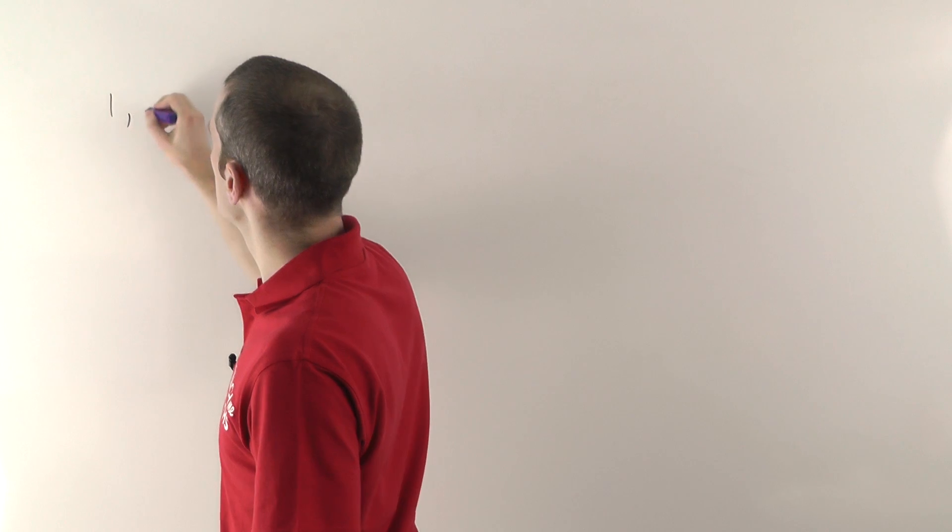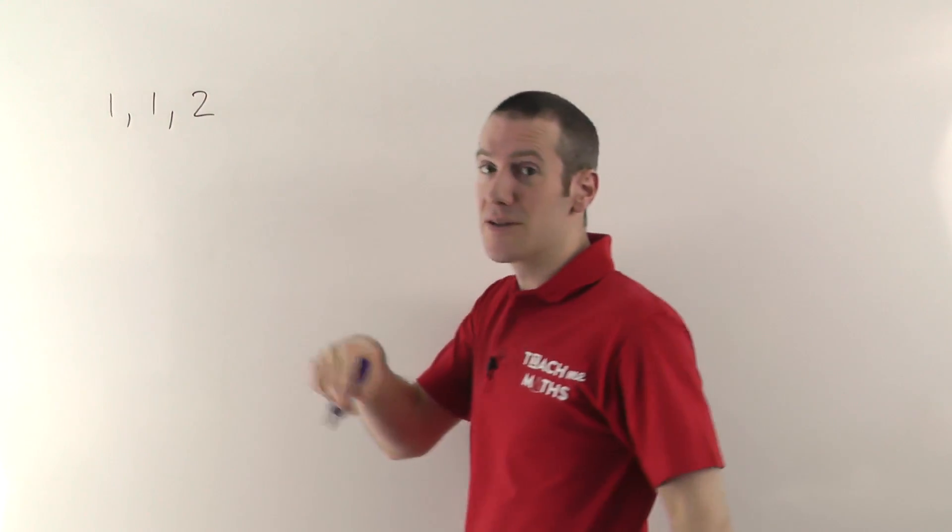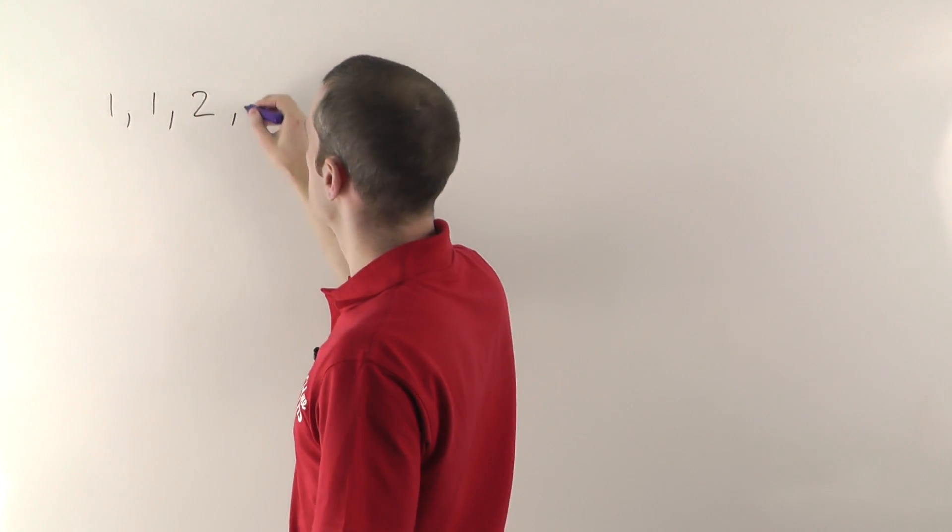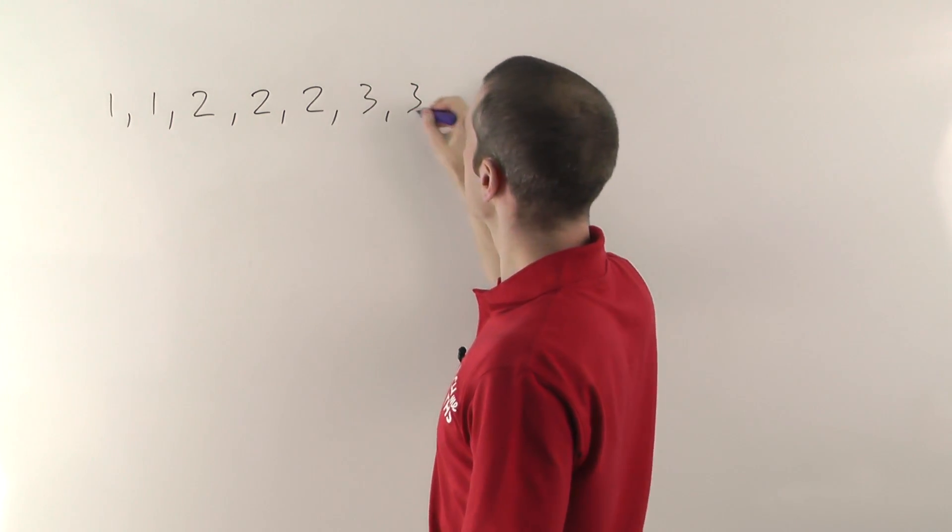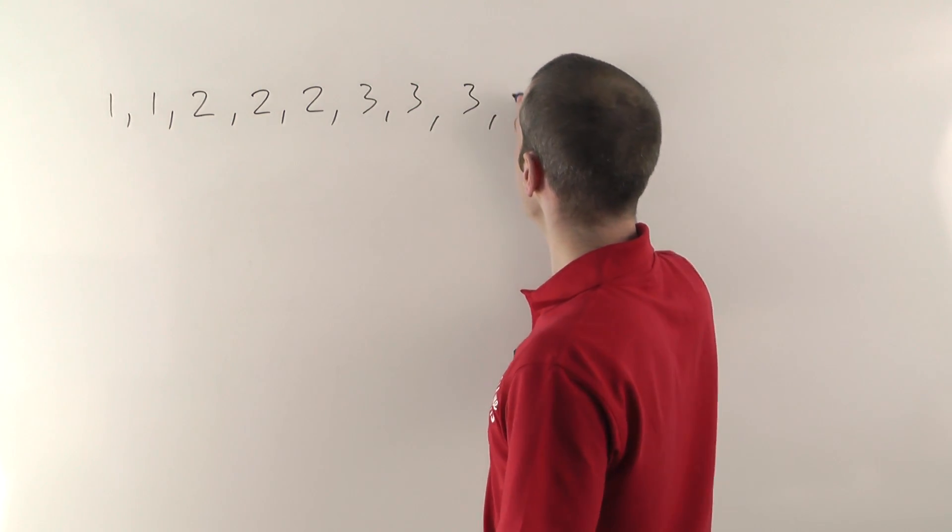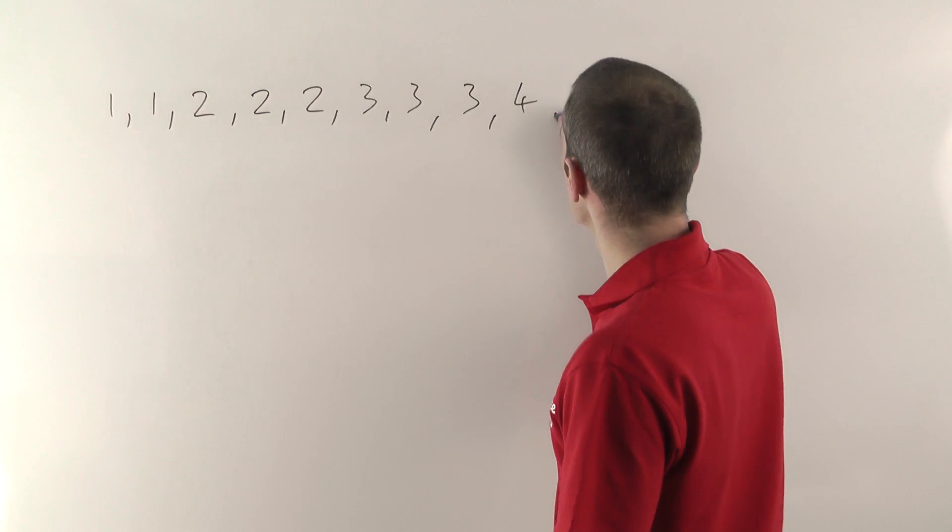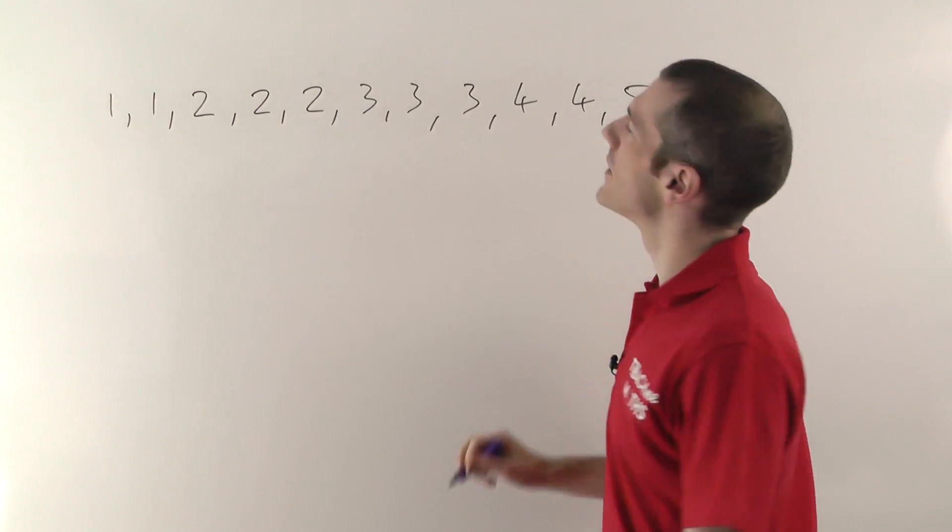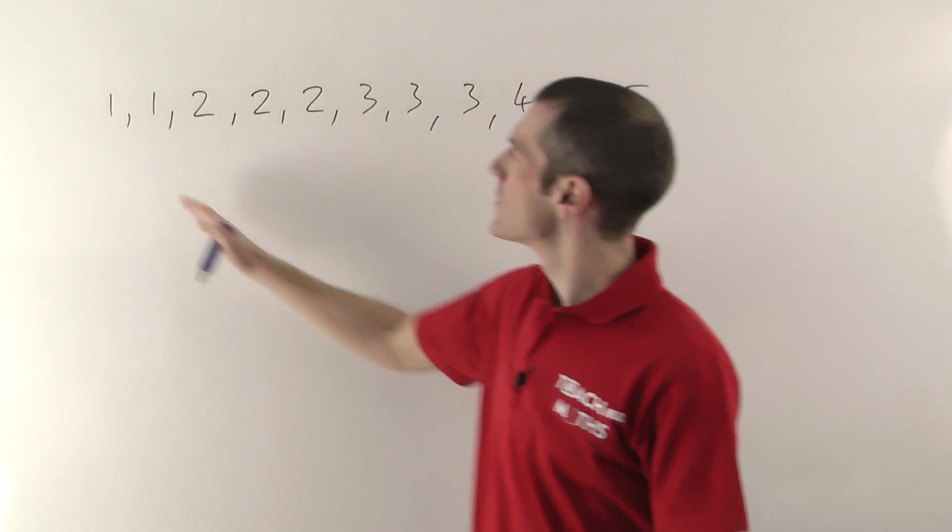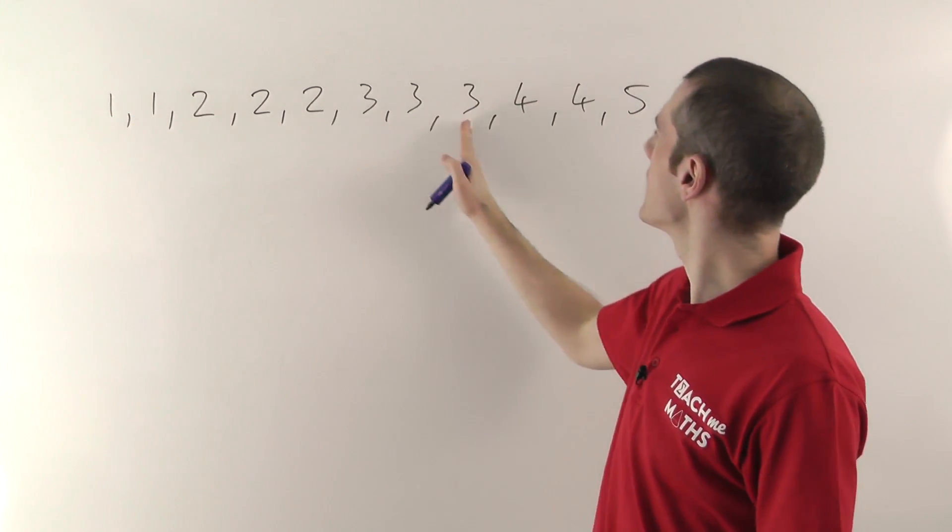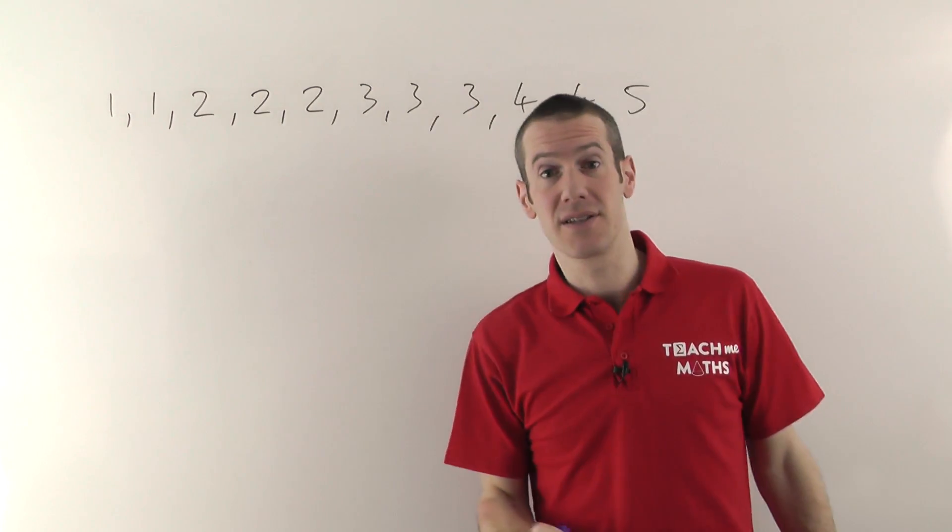These are very similar to the numbers I used for the mean, median, and mode video. So imagine we've gone around a bunch of families and we asked each family, how many children do you have? And I wrote a slightly different list from before. So I've got 1, 1, 2, 2, 2, 3, 3, 3, 4, 5 - 11 numbers this time.